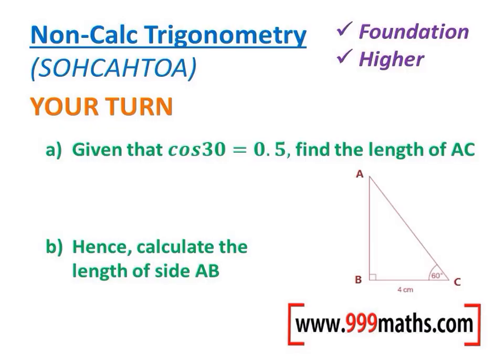Have a go at this question, which is very similar to the answer before. We're told that cos 30 equals 0.5, so it's very likely that we're going to have to use that in the question. We want to find the length of A to C. A to C is this side here, so I'm going to label that up with an X.